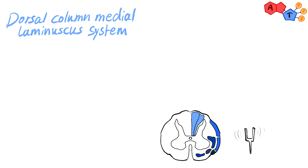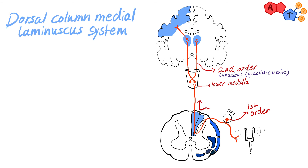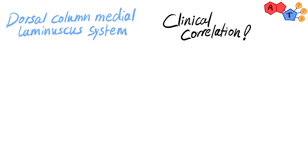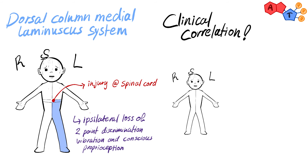Following the route of the dorsal column system: a stimulus reaches the first order neuron in the dorsal root ganglia, and the axons of the first order neuron ascend as-is until they reach the lower part of the medulla. Fasciculus gracilis and cuneatus synapse there with second order neurons in nucleus gracilis and nucleus cuneatus respectively. The second order neuron in the medulla then decussates to the contralateral side, ascending to the VPL nucleus in the thalamus, where it synapses. A third order neuron carries the information to higher centers in the cerebral cortex. Spinal cord injury here causes ipsilateral loss of two-point discrimination, vibration, and conscious proprioception below the lesion level.